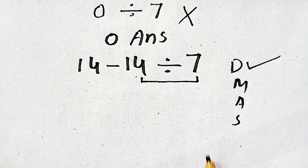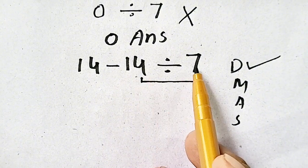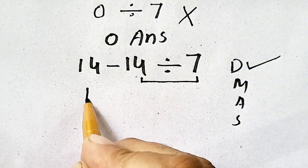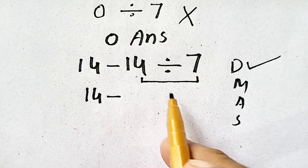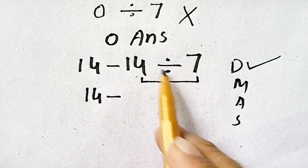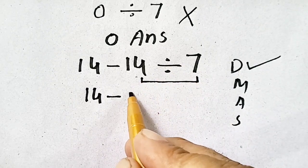So this is division, and we have to solve 14 divided by 7 first. So 14 divided by 7 will equal 2.